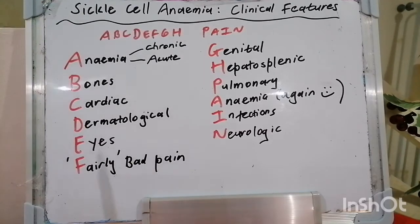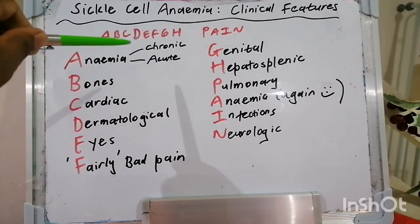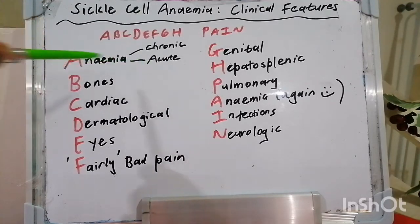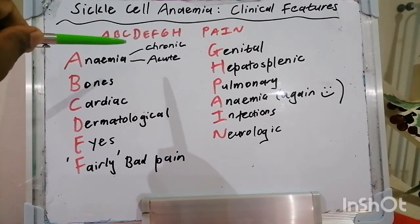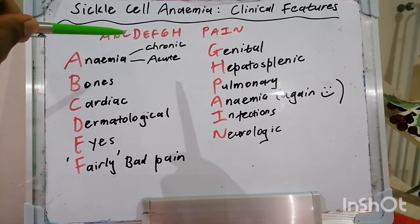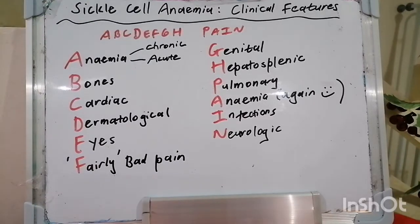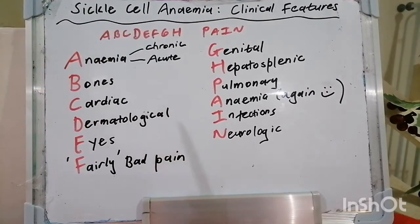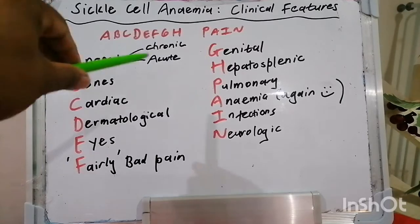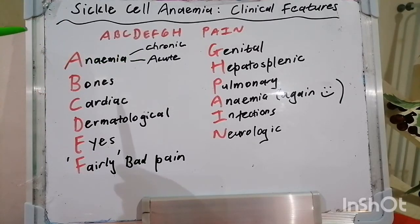The clinical features of sickle cell anemia — let's start with A. A stands for anemia on the basis of chronic hemolysis or it can be an acute anemia. In terms of chronic hemolysis, this involves a normocytic or macrocytic anemia due to reticulocytosis, elevated bilirubin, LDH, and low haptoglobin. There may also be an association between chronic anemia and folate and iron deficiency from increased utilization. We can also get acute anemia on the basis of crises.